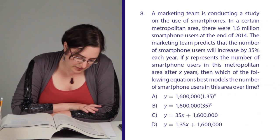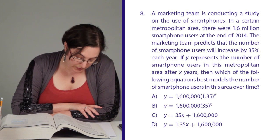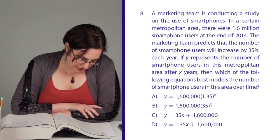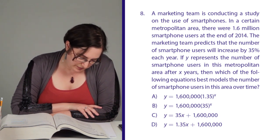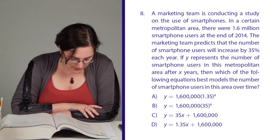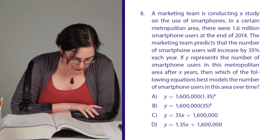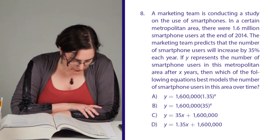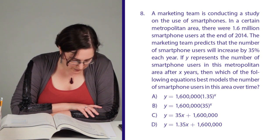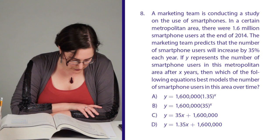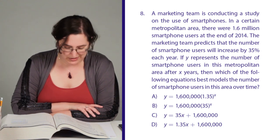A marketing team is conducting a study on the use of smartphones. In a certain metropolitan area, there were 1.6 million smartphone users at the end of 2014. The marketing team predicts the number of smartphone users will increase by 35% each year. If Y represents the number of smartphone users in this metropolitan area after X years, then which of the following equations best models the number of smartphone users in this area over time?